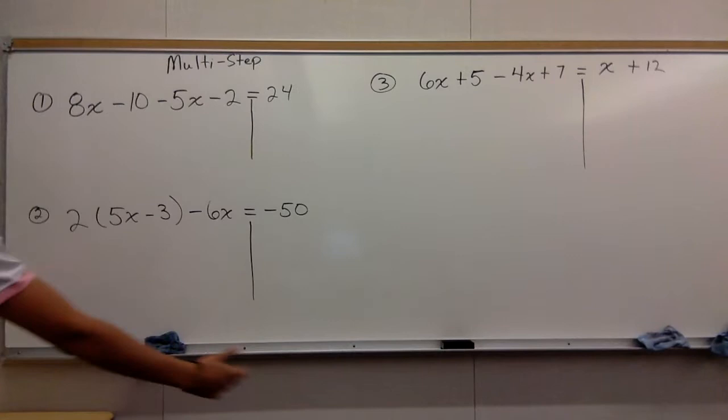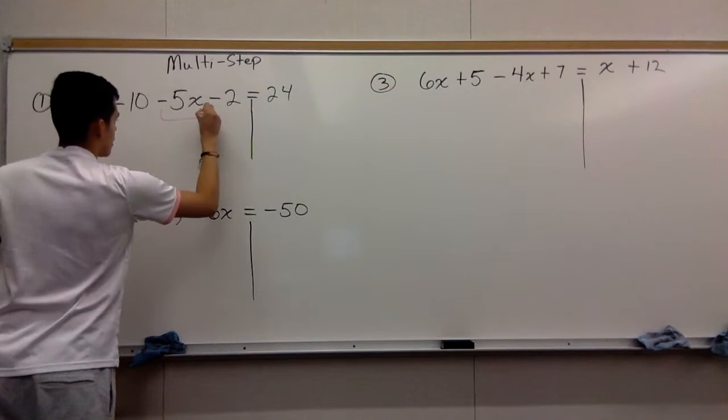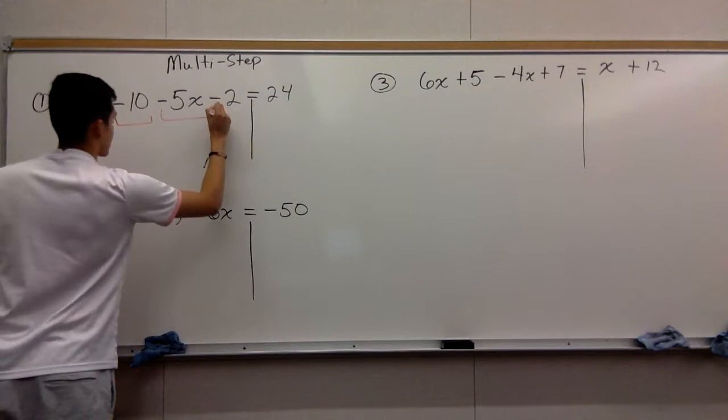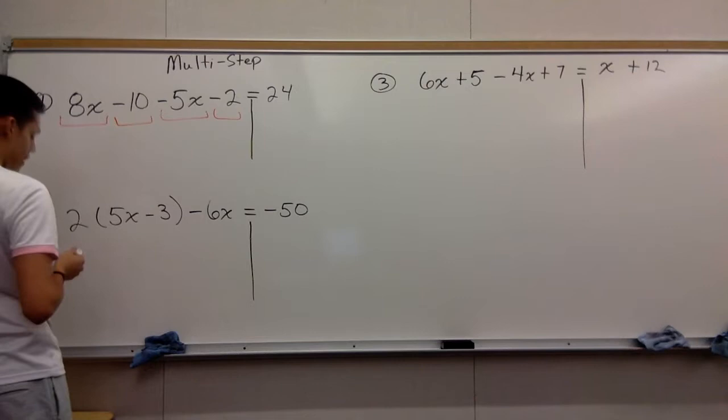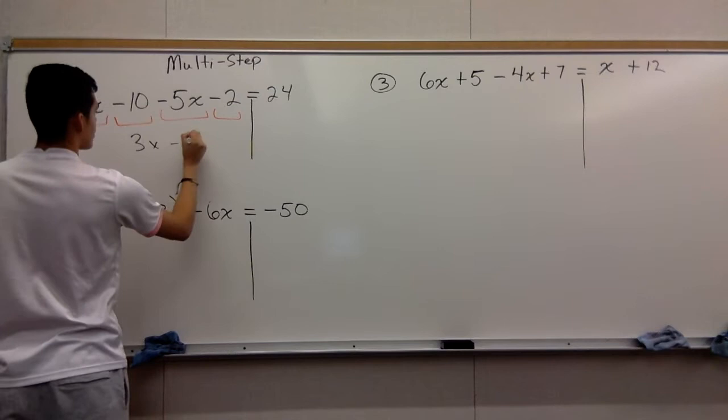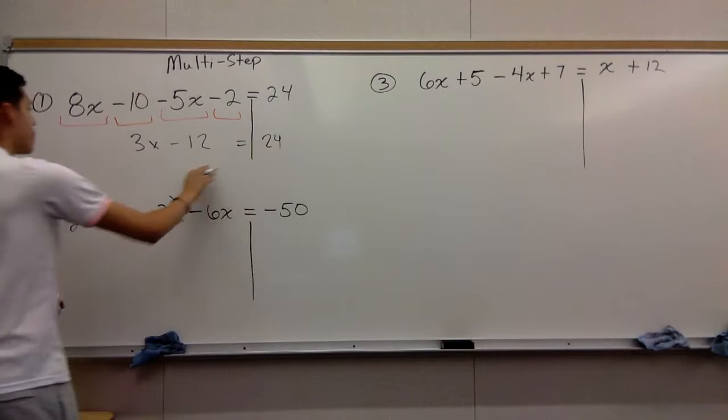Now we're gonna work through them. You guys know the process - you're combining like terms. You see x's and constants. It's negative 10, negative 2. You have 8x minus 5x. Eight minus five gives you 3x. Negative 10 minus 2 gives you negative 12. Equals 24.